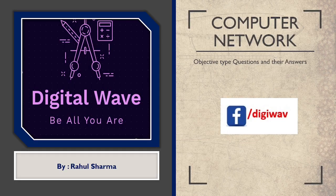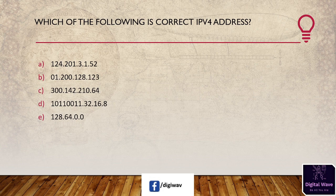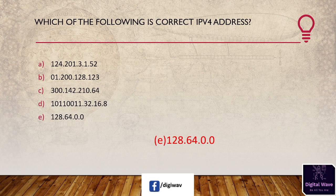The first question is: which of the following is a correct IPv4 address? Options are: (A) 124.201.3.152, (B) 012.001.28.123, (C) 300.142.210.64, (D) 1011001.32.16.8, and (E) 128.64.0.0. The answer is E, 128.64.0.0.